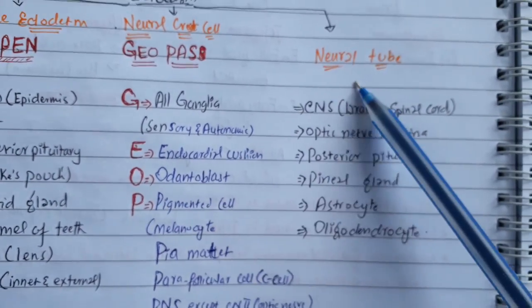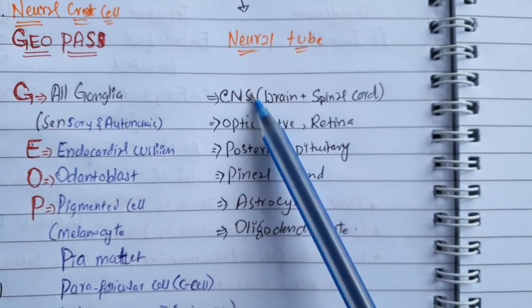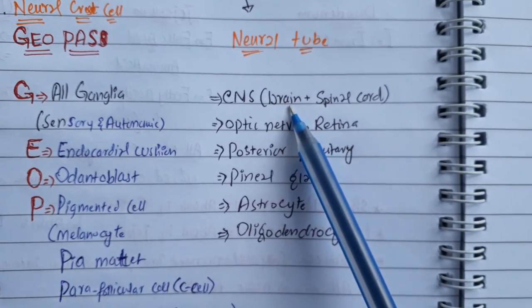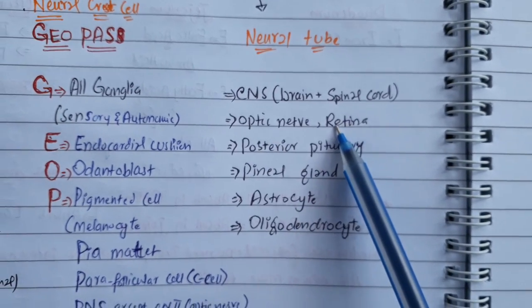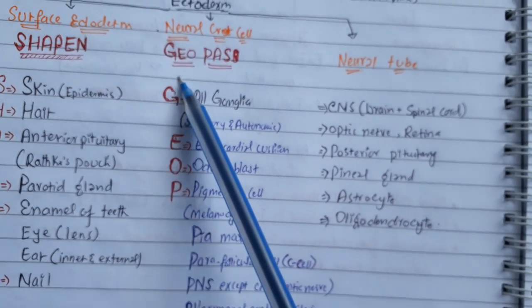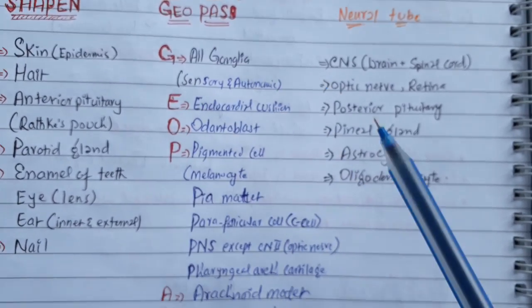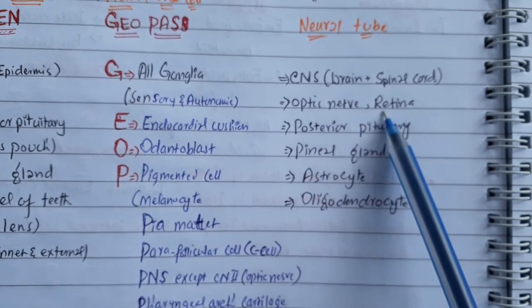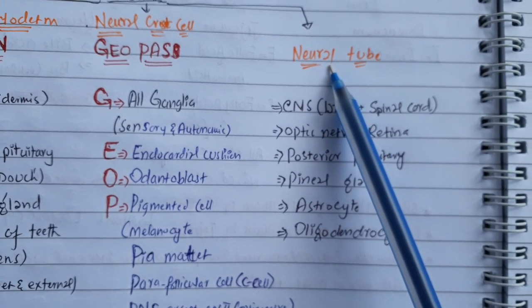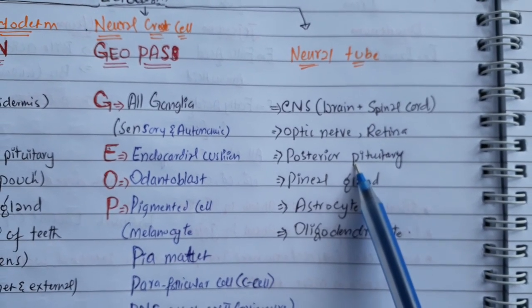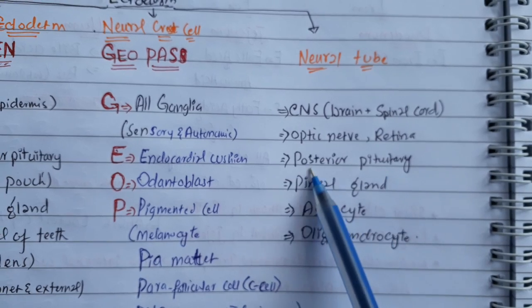The neural tube is going to form the central nervous system, consisting of the brain and spinal cord. It also forms the optic nerve and retina. The peripheral nervous system is derived from the neural crest, except for the optic nerve and retina. The optic nerve and retina are derived from the neural tube. Posterior pituitary, which is called neurohypophysis, is also a derivative of the neural tube — that's why it's called neurohypophysis.